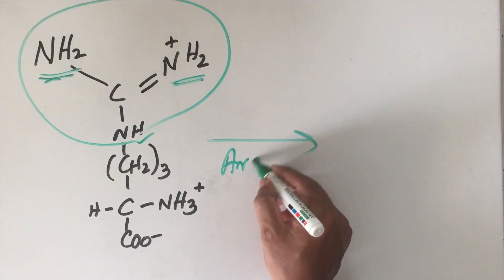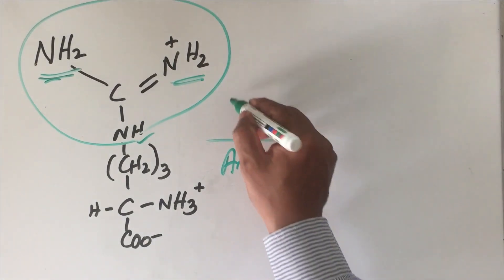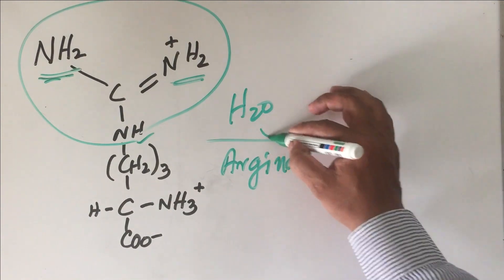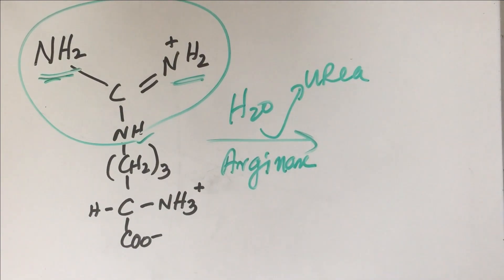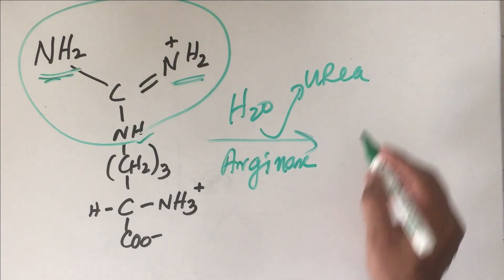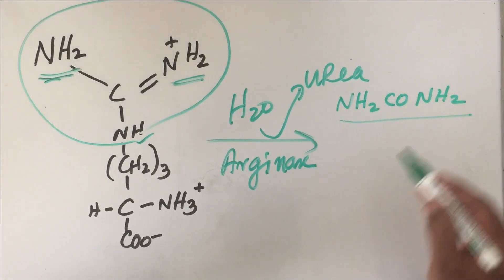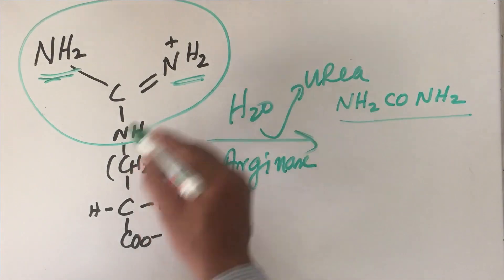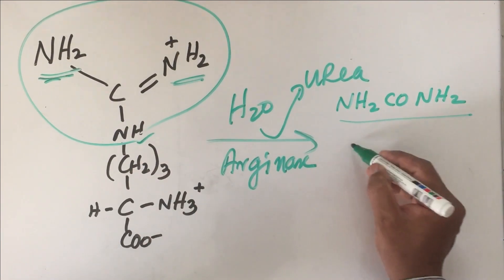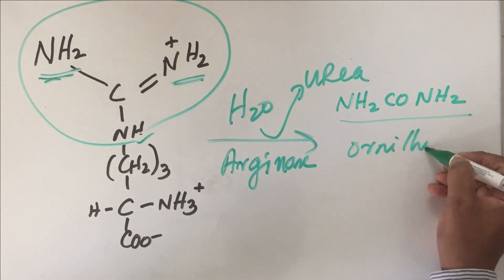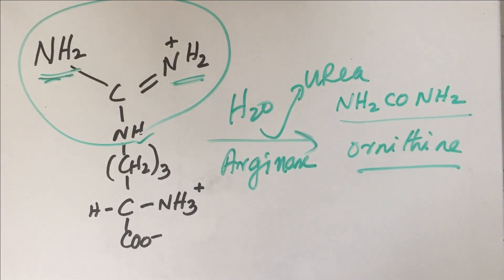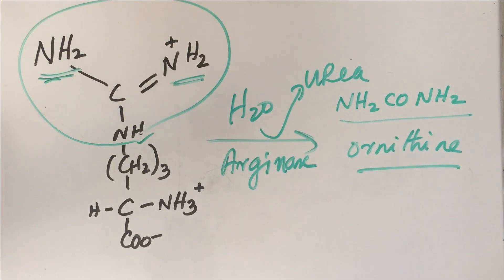In the last step, the enzyme arginase acts on arginine, removing urea — with structure NH₂-CO-NH₂ — as the ultimate end product of the urea cycle. The remaining portion is converted back to ornithine, which returns to the mitochondrial matrix to carry the cycle forward.